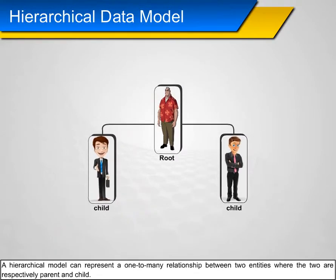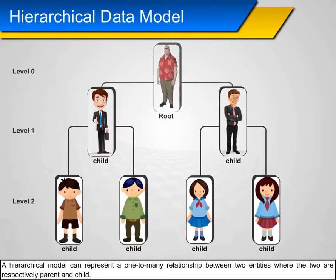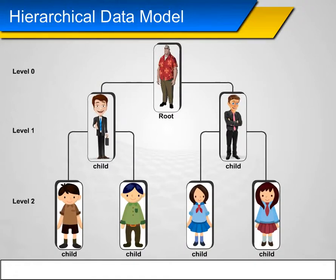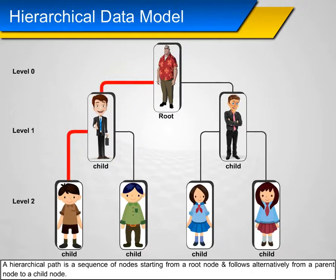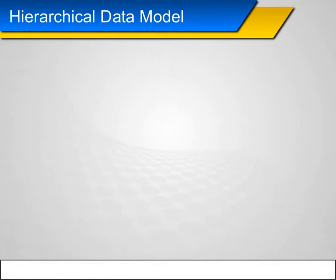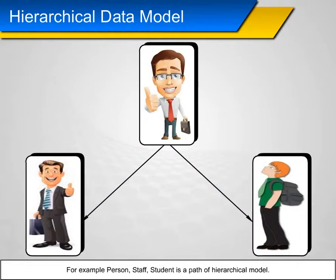A hierarchical model can represent a one-to-many relationship between two entities, where the two are respectively parent and child. A hierarchical path is a sequence of nodes starting from a root node and following alternately from a parent node to a child node. For example, person → staff → student is a path of a hierarchical model.